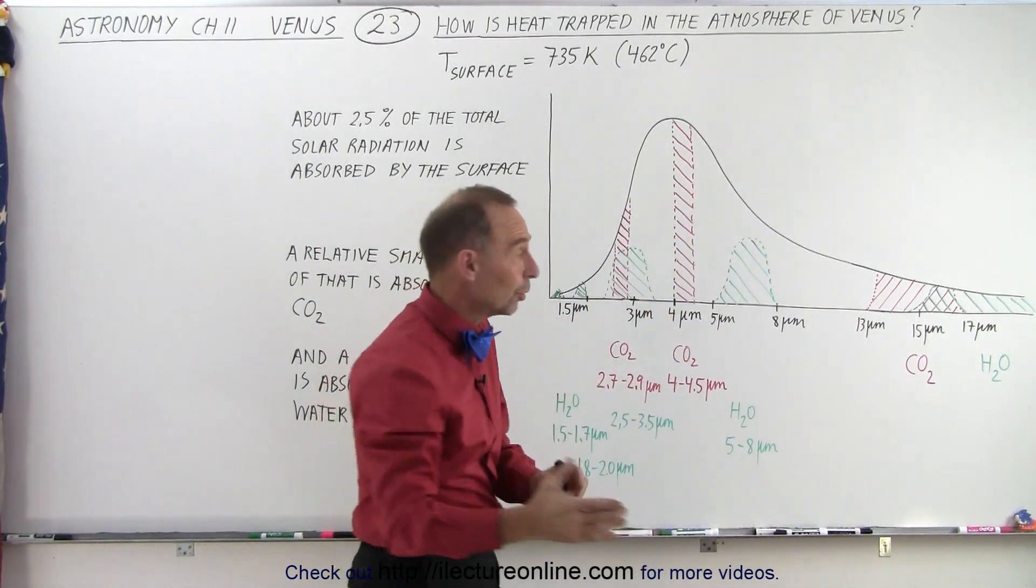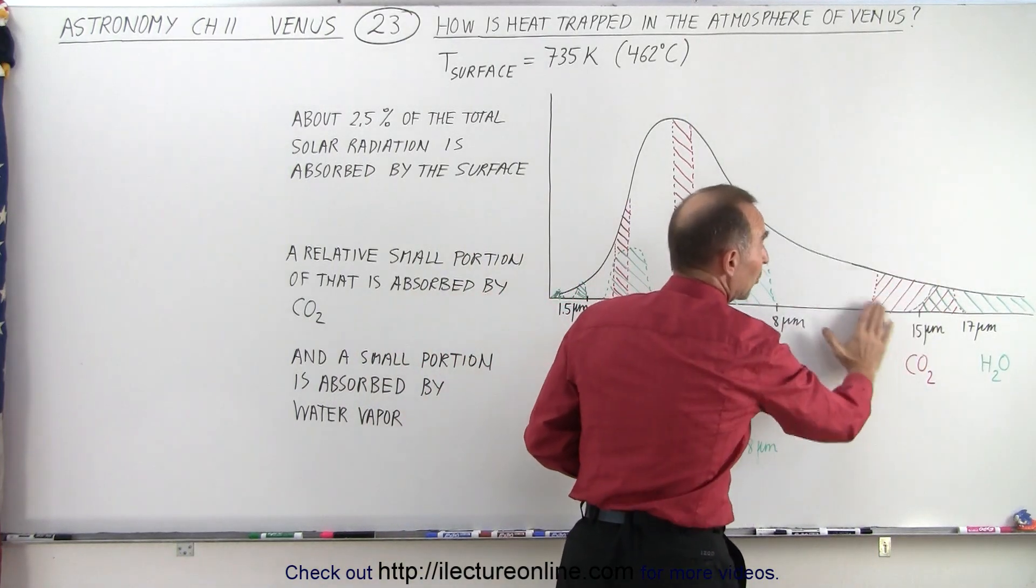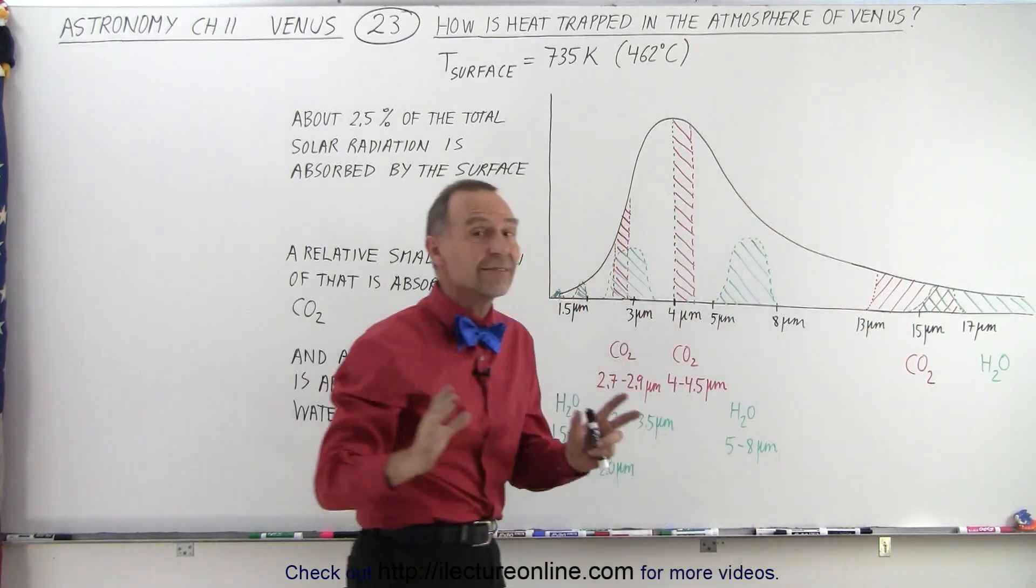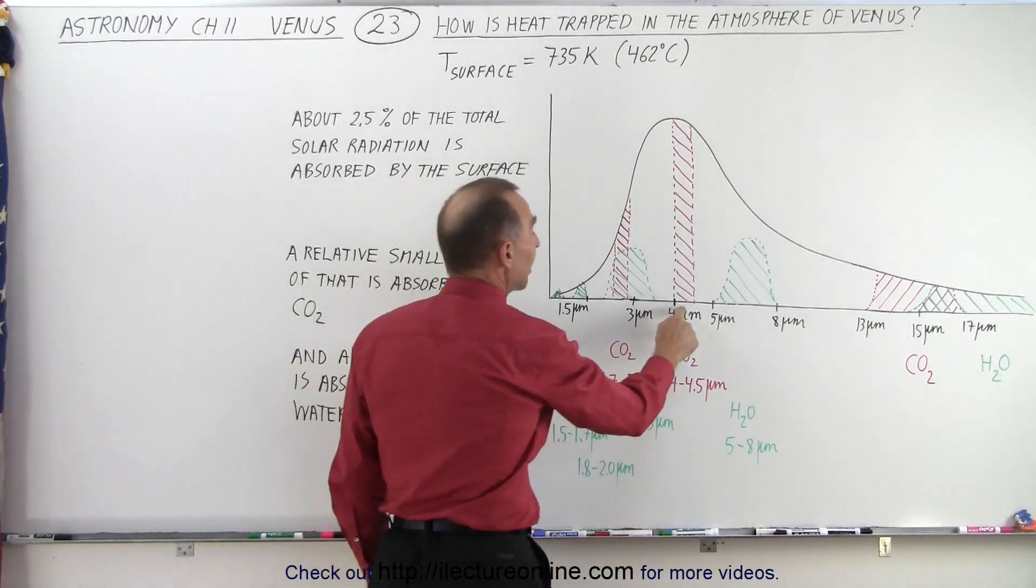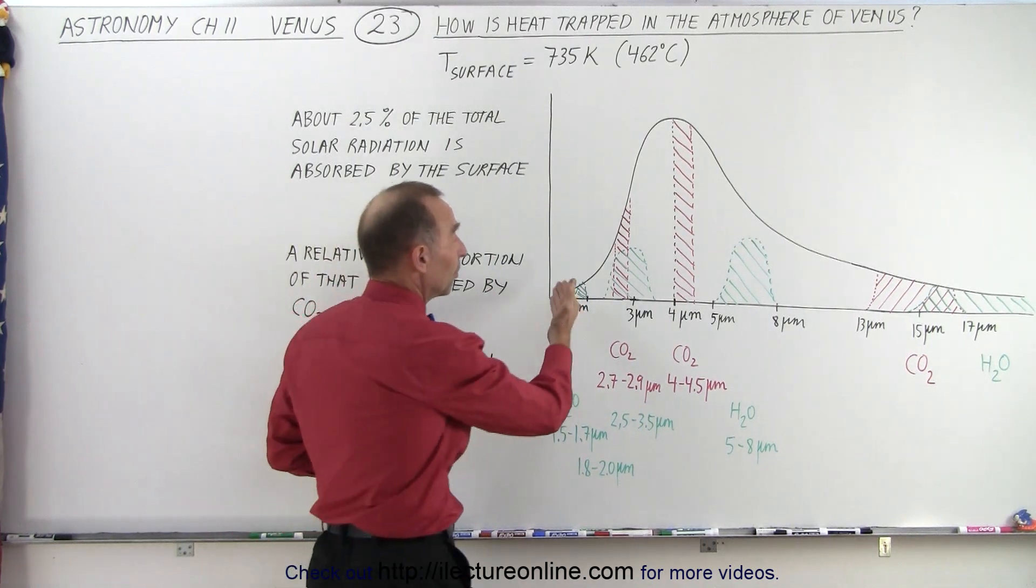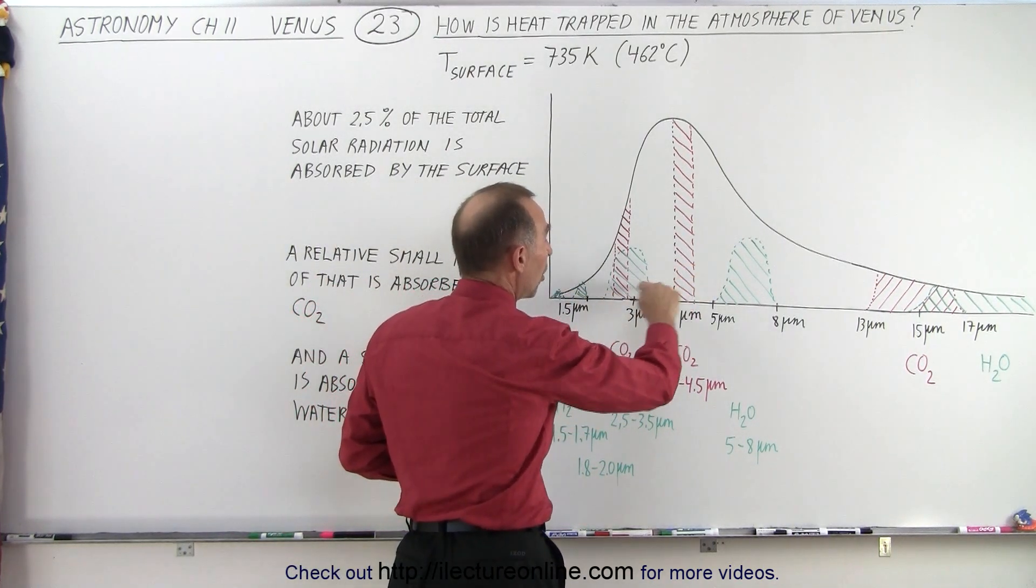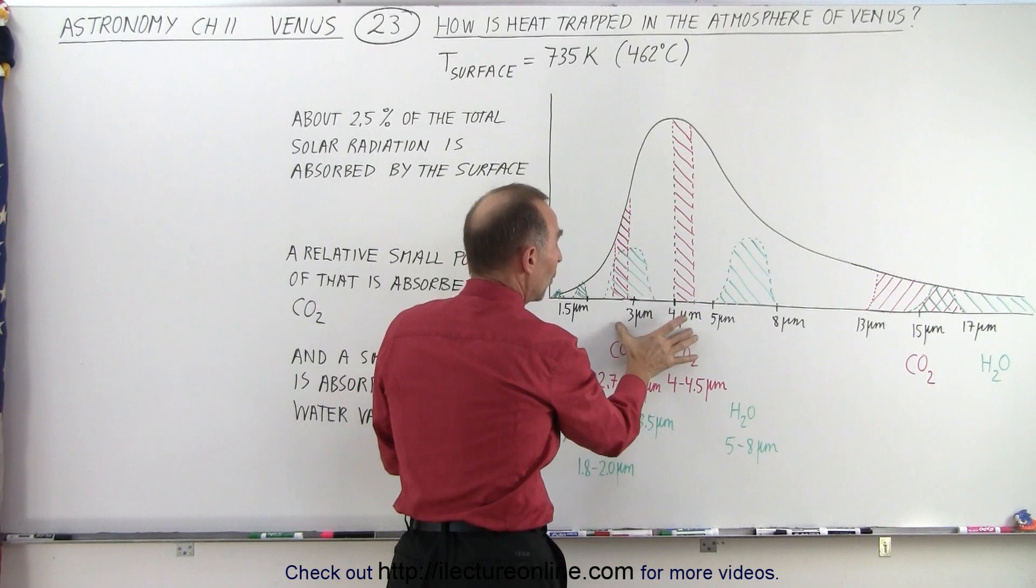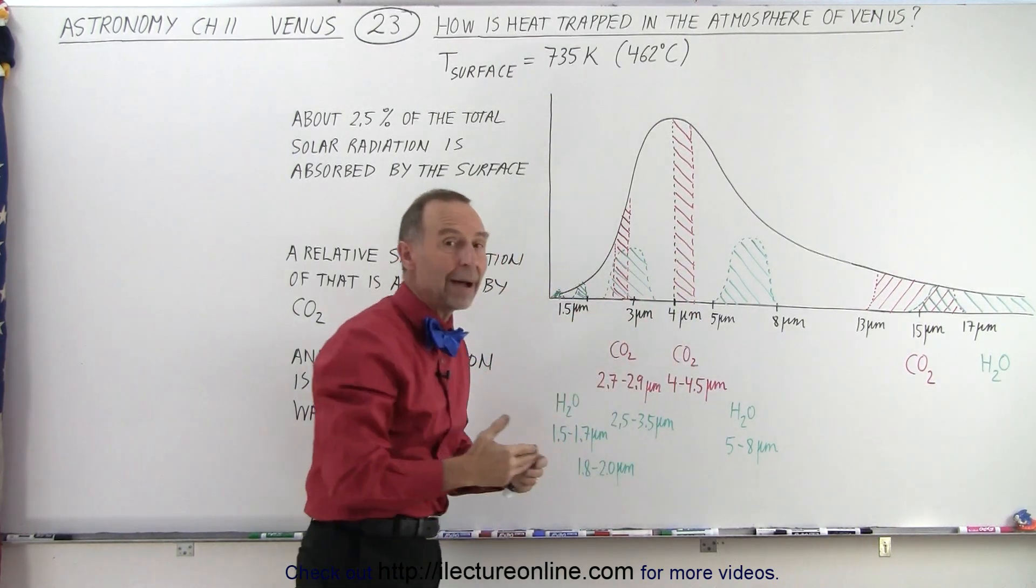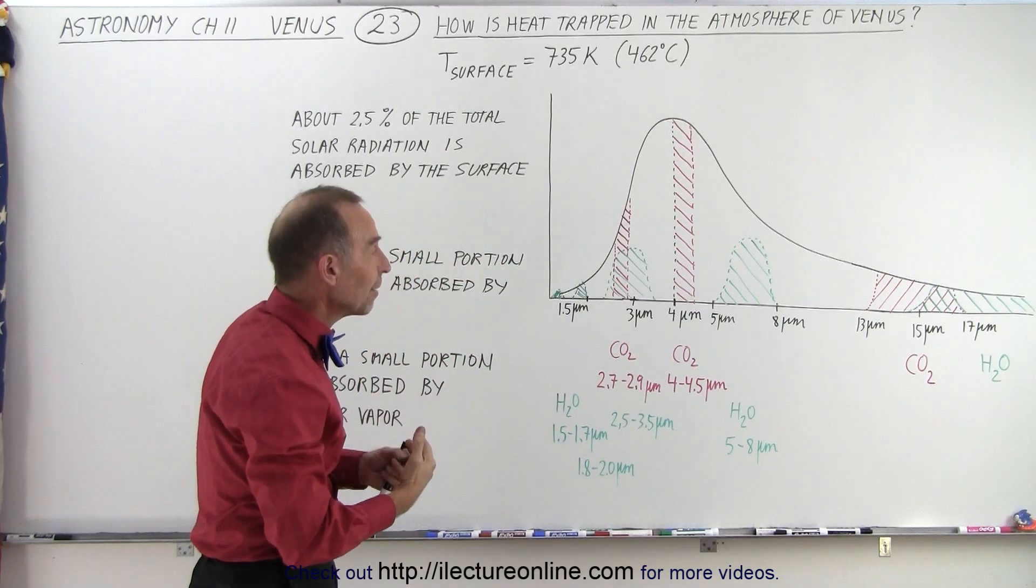just like on Earth, but on Earth, this is the primary means by which carbon dioxide absorbs energy from the surface. You can see that's not the case on Venus. The other two absorption bands, which are almost insignificant on Earth, first of all, because the black body radiation curve is very small at this wavelength on Earth, and that the two bands are almost completely enveloped by the absorption of water vapor.